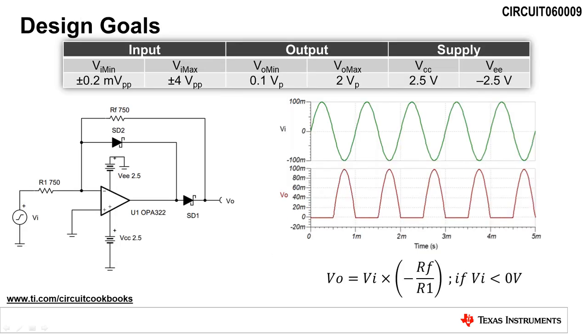The transfer function of this circuit is given by the equation for the output voltage VO. The input signal VI is amplified by negative RF divided by R1, but only for negative values of VI. For positive values of VI, the output should be 0.